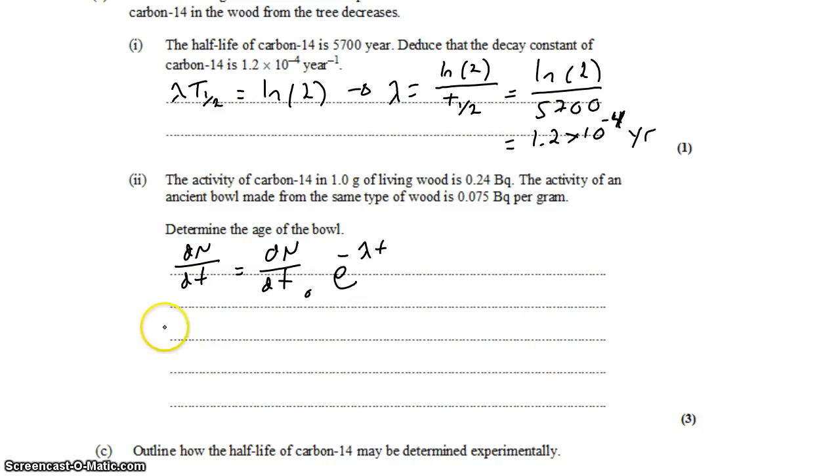So the activity now is 0.075. The activity originally was 0.24. And the decay constant is 1.2 times 10 to the negative 4. And we want to solve this for t.